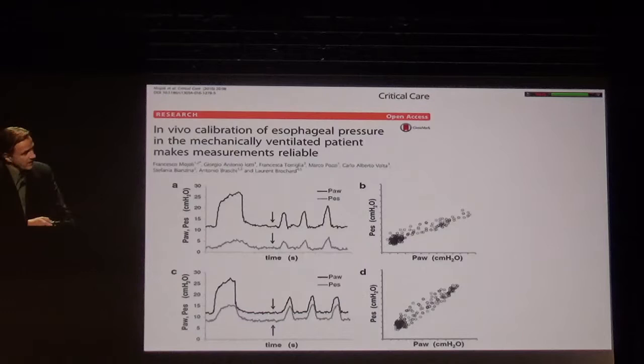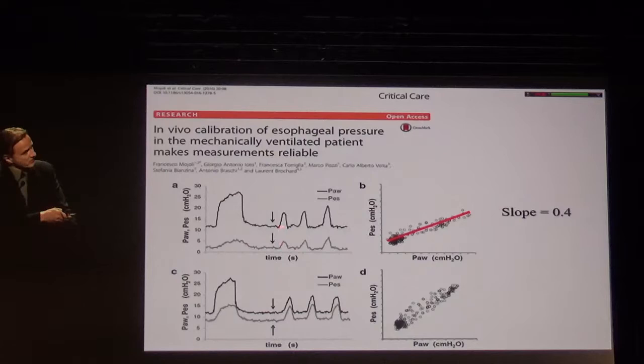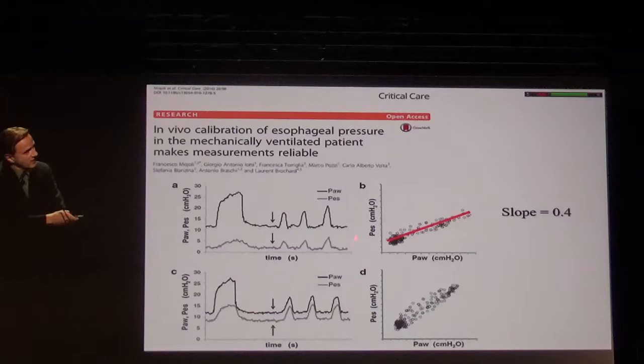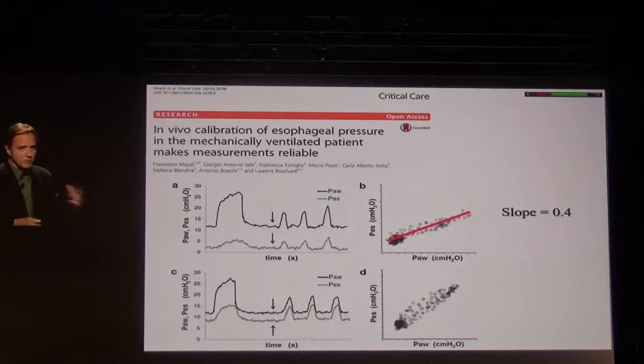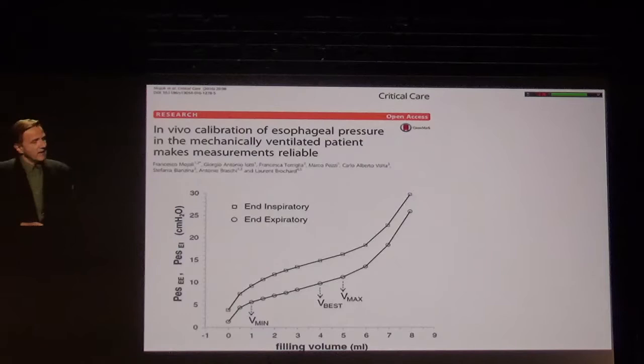Sometimes they do not match — in this case the swings in esophageal pressure are much smaller. This is not active contraction of the diaphragm, but the physician is pushing the chest wall. If you plot airway and esophageal pressure, the slope is less than one; ideally it should be one. A slope of 0.4 means attenuation. You then refill the balloon, move the catheter, and get a better slope.